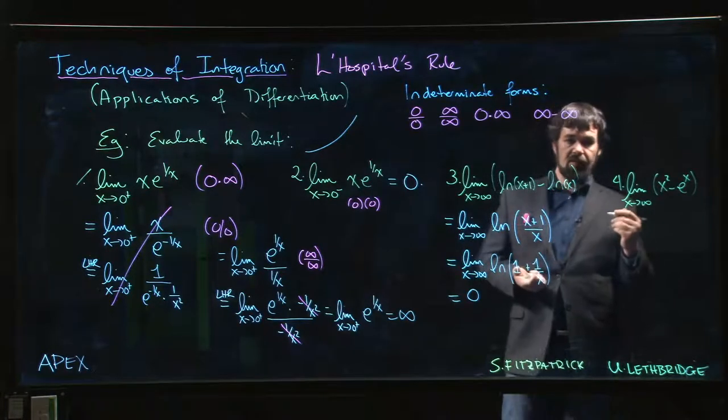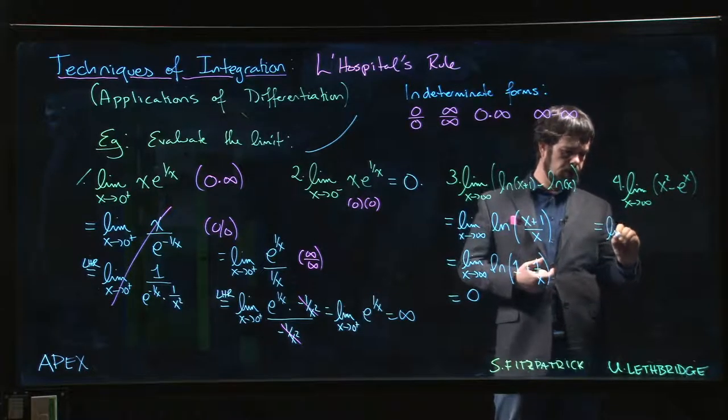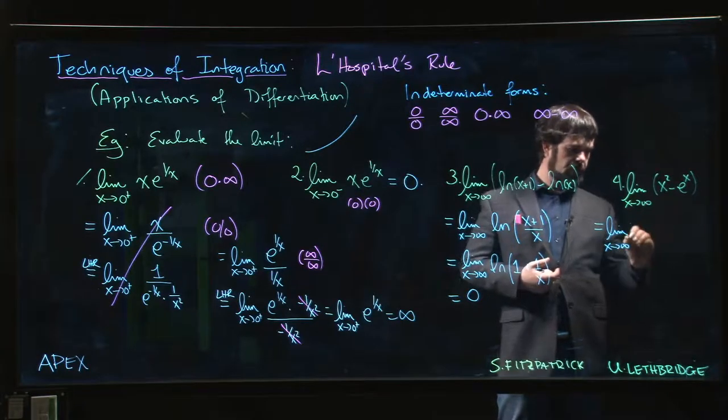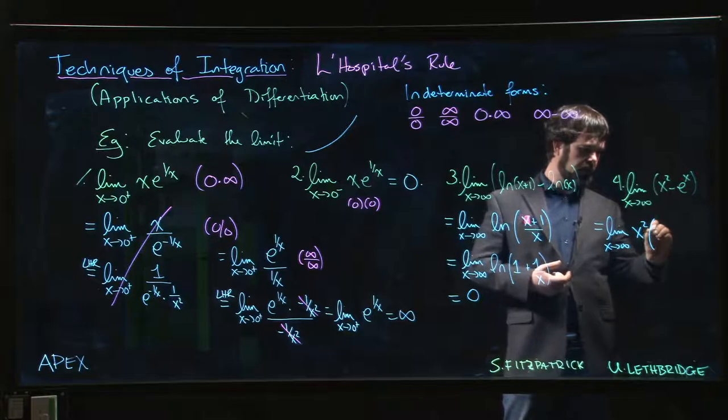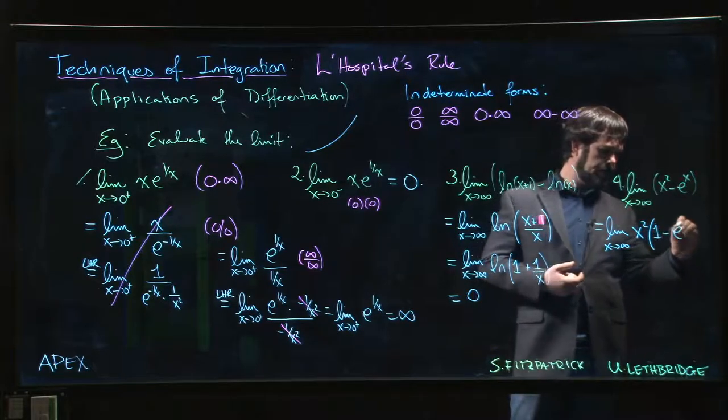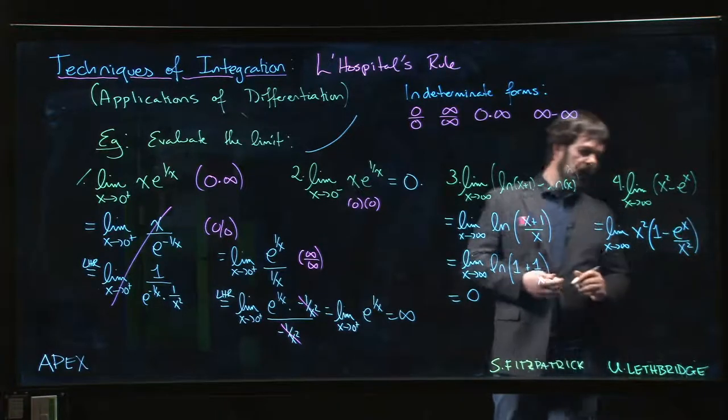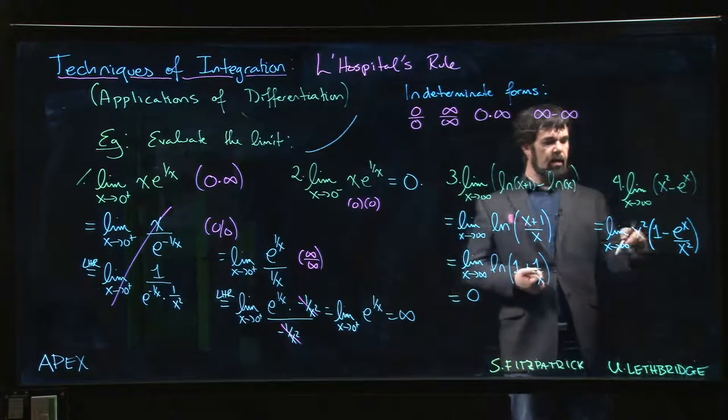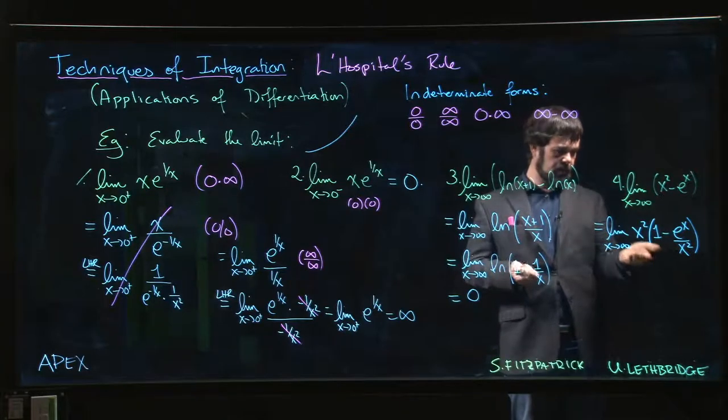What you can do is factor out the x² and write x² times (1 - e^x/x²). Now we have a limit of a product. So we say, okay, can we do product of the limits? I mean, they're infinite, but sure. What's going on over here?